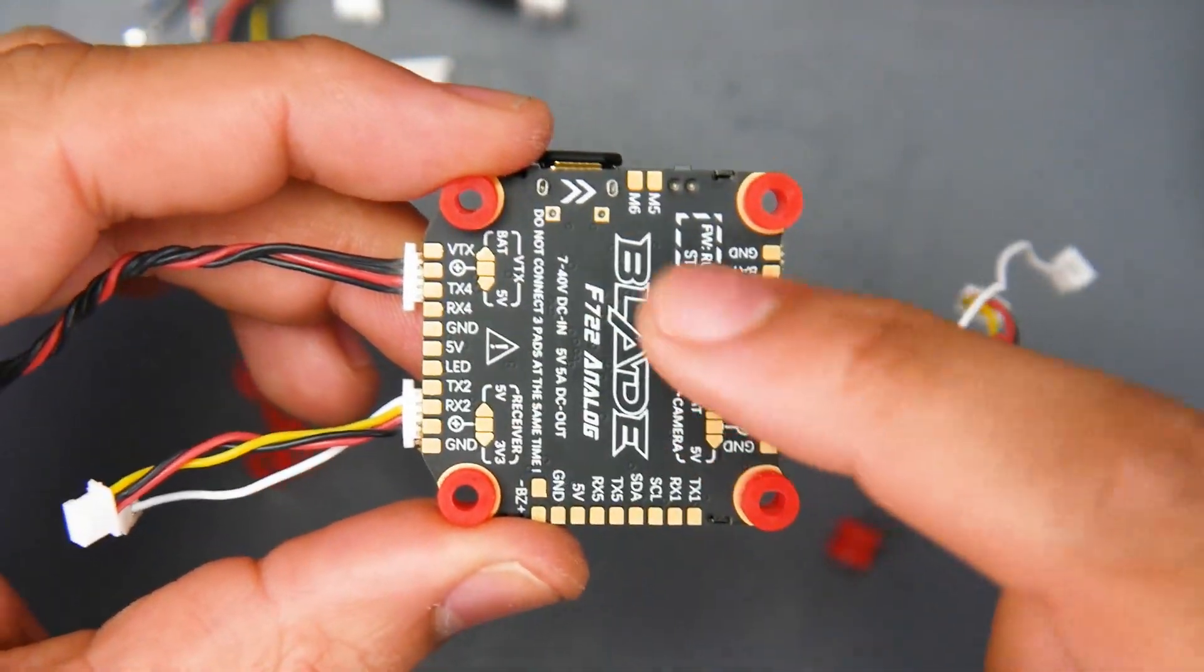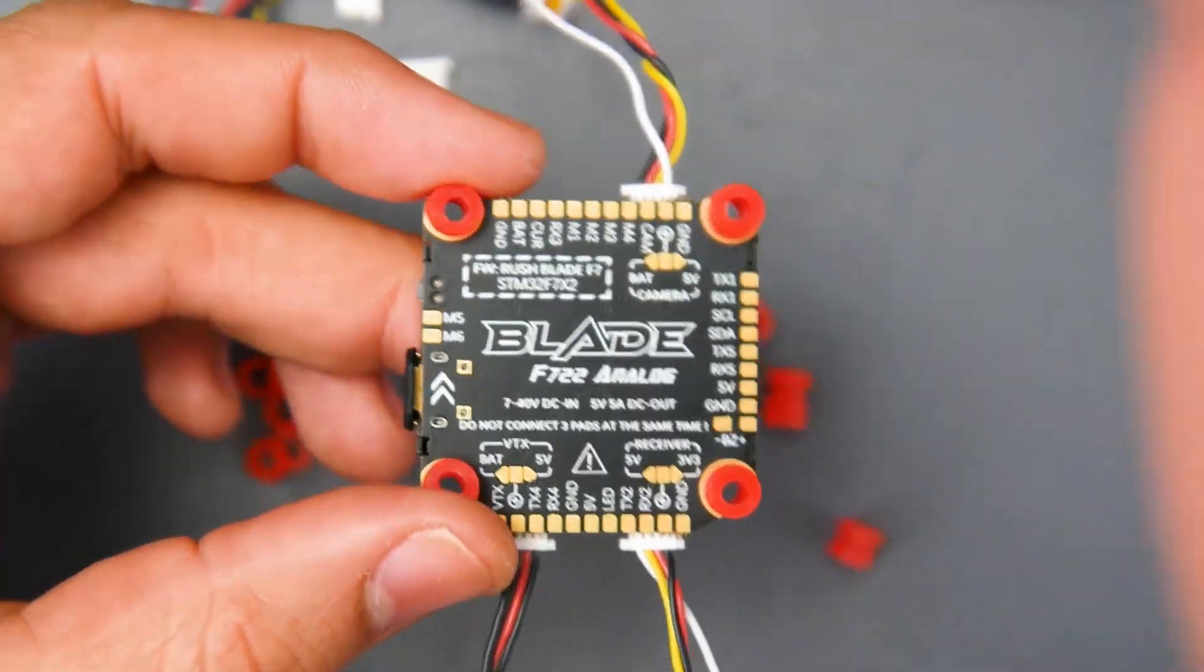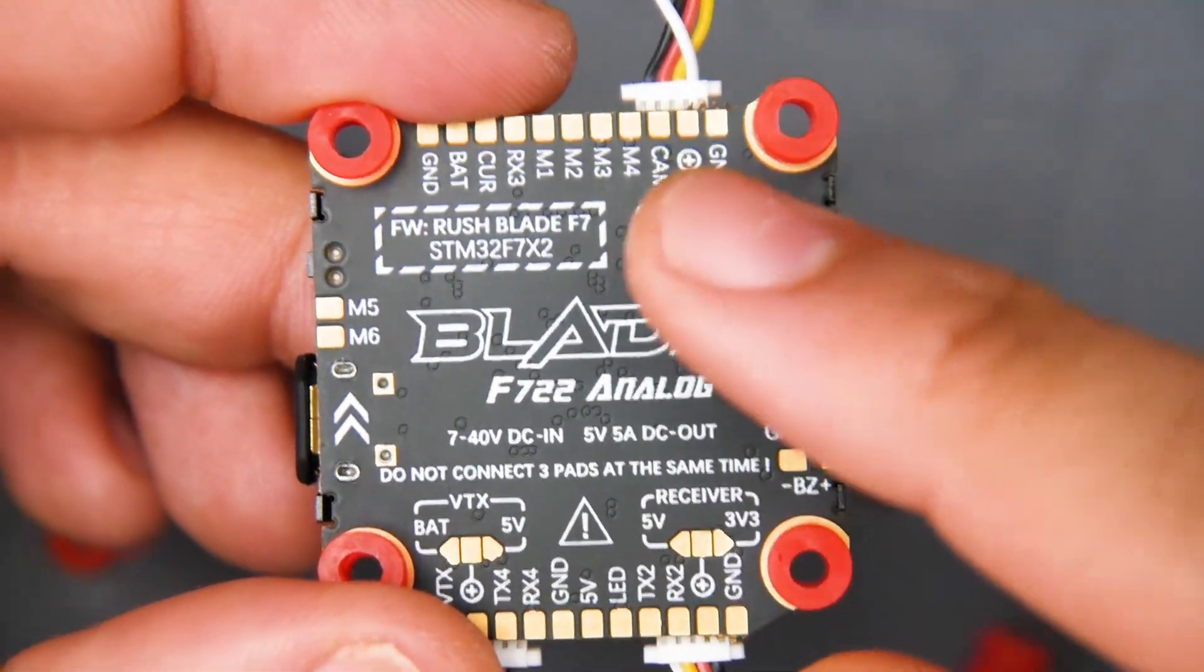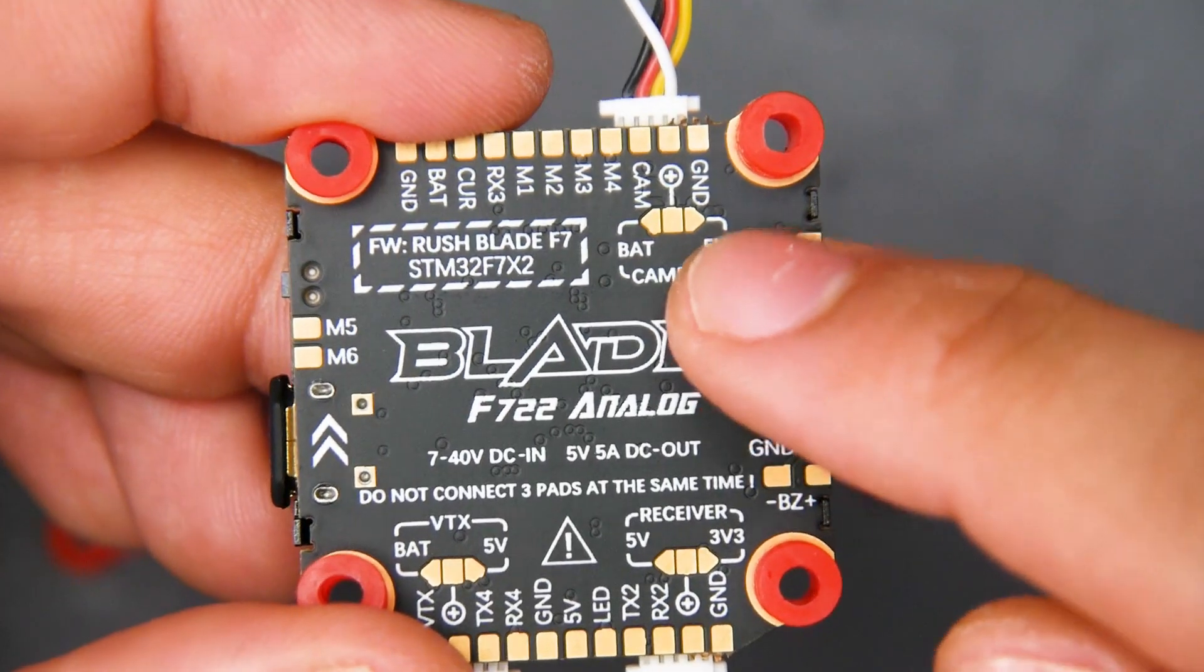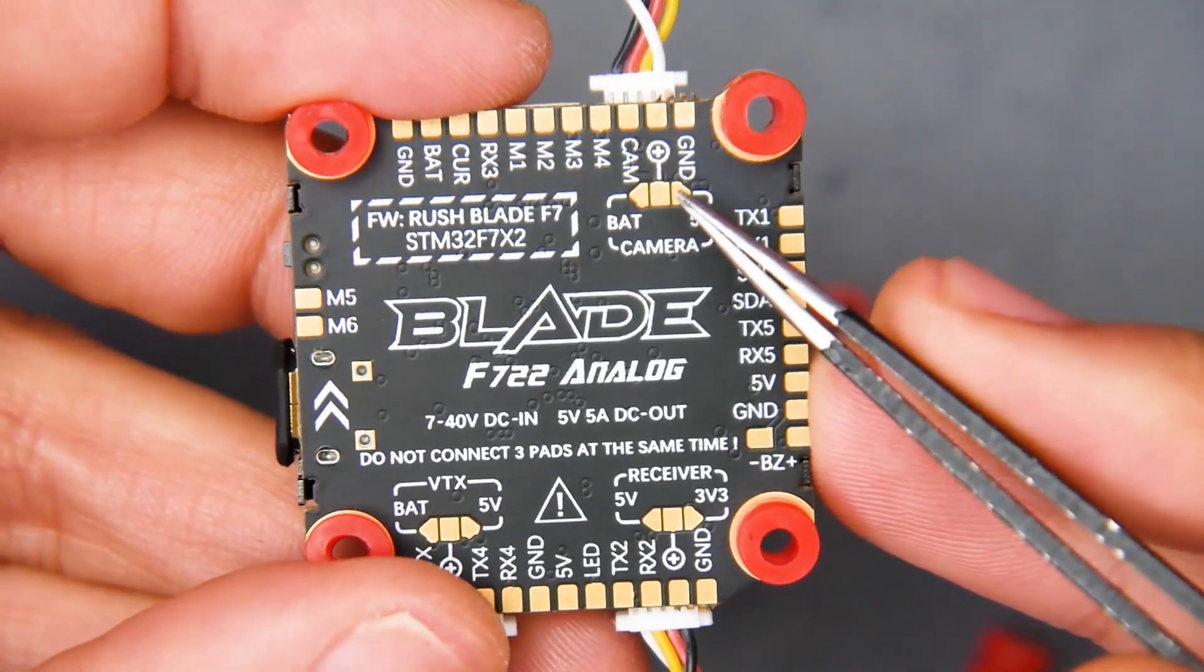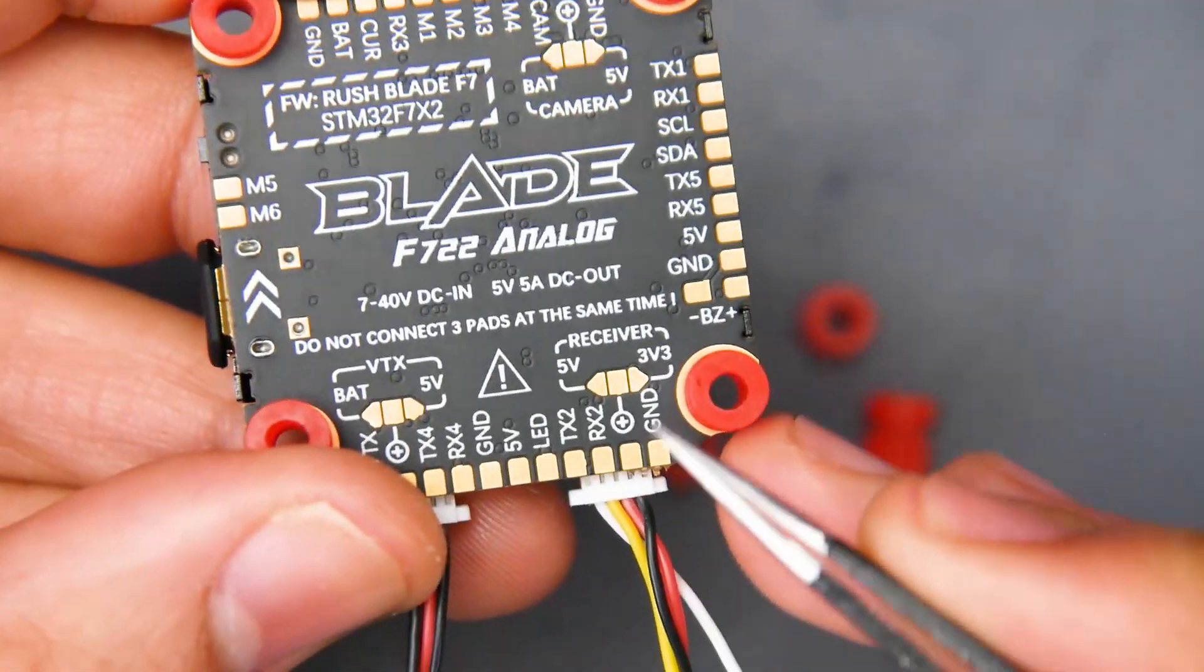And you will have to slightly solder here. Let's actually grab a closer look at that. So here we can see the camera. So if you wanted to give battery voltage, which I never recommend, always five volts. So you'd have to bridge this one with this one with solder, these two on the right. And that would give the camera five volts.